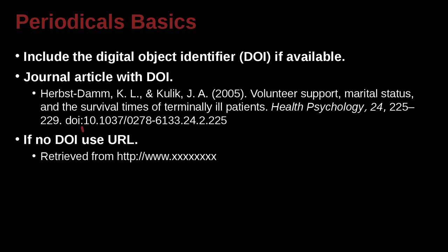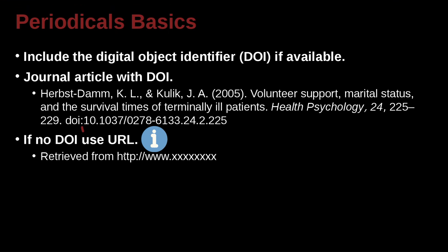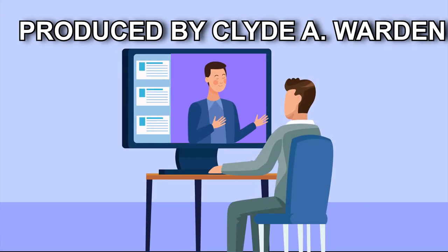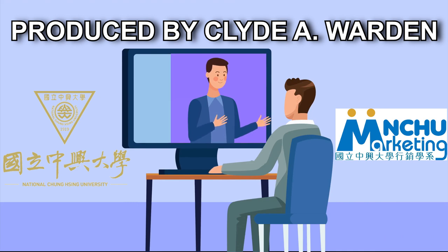If you don't have a DOI but you still have a web address, or a URL — Universal Resource Locator — you can go ahead and use that instead. It would be HTTP, and then you go ahead and write down the whole address, just like a regular web address. We'll see you next time.